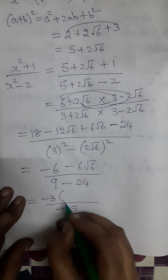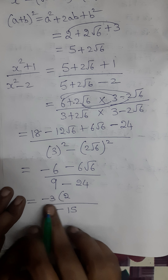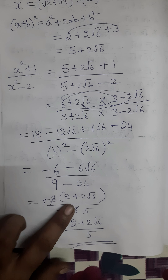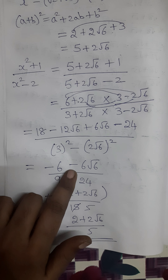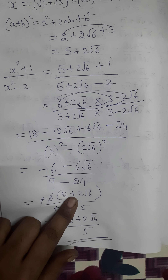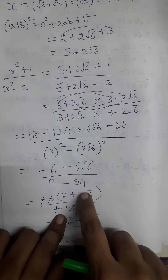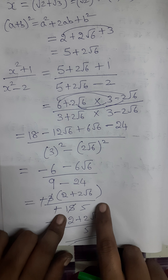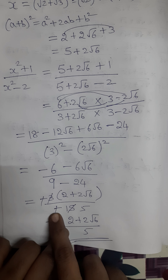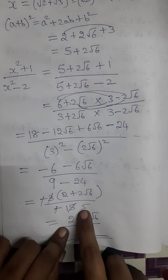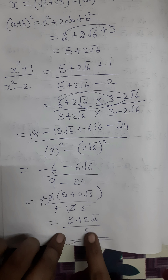In the numerator, let me take minus 3 as common factor. Taking minus 3 common from minus 6 minus 6√6 gives minus 3 times (2 + 2√6). The minus sign in the numerator and minus sign in the denominator cancel. Then canceling 3 with 15 leaves 5 in the denominator. So the final answer is (2 + 2√6) / 5.